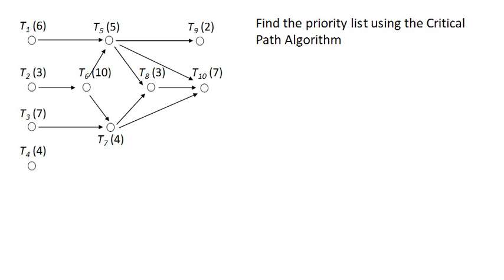So we want to find the priority list for this digraph using the critical path algorithm. There's a couple versions of the critical path algorithm. We're going to start with the definitional version that turns out not to be very efficient, but it'll help us understand how this works.